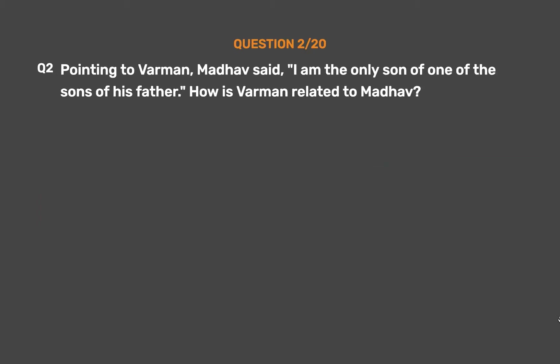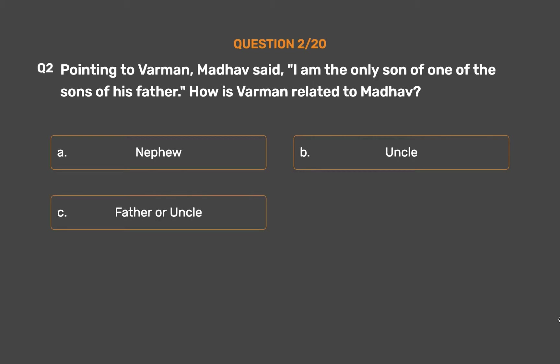Question number 2. Pointing to Varman, Madhav said, 'I am the only son of one of the sons of his father.' How is Varman related to Madhav? Option A: Nephew. Option B: Uncle. Option C: Father or Uncle. Option D: Father.